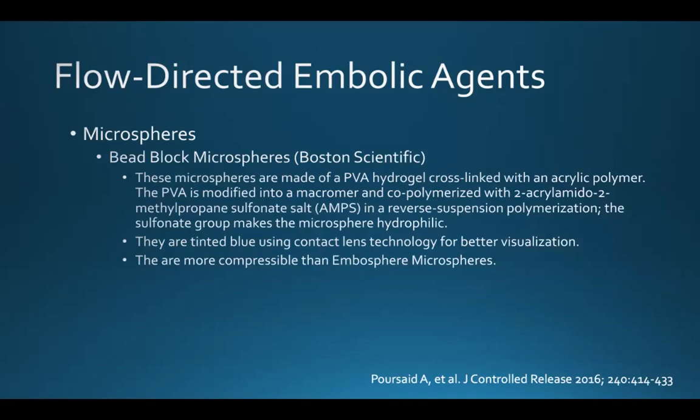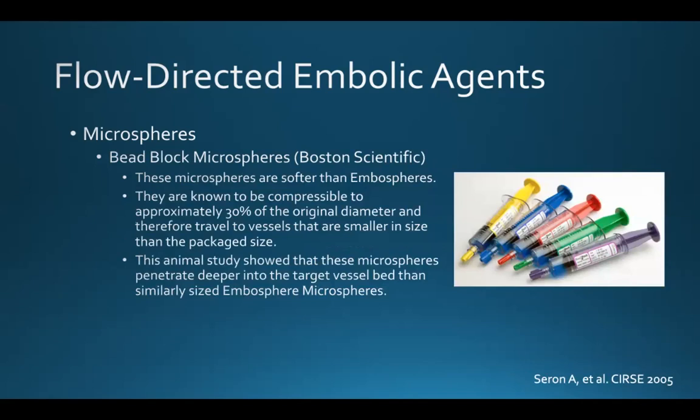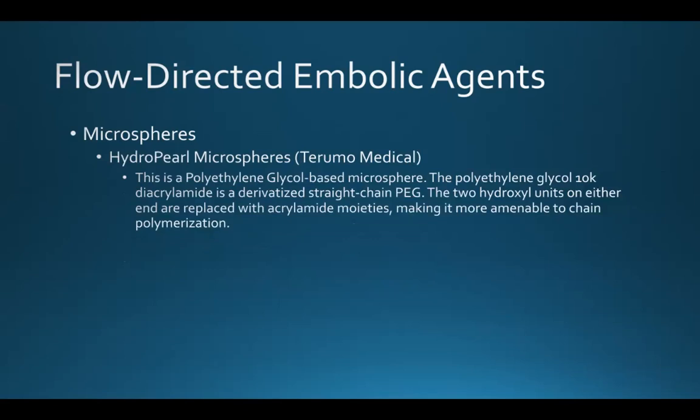Another available agent is bead block microspheres, made of a PVA hydrogel cross-linked with an acrylic polymer. They are tinted blue through contact lens technology so we can better see them, and they tend to be more compressible than embospheres — known to compress to approximately 30% of the original diameter, therefore traveling to vessels smaller than the package size. An animal study confirmed that these microspheres penetrate deeper into the target vessel bed than similarly sized embospheres. I also want to briefly mention the newest bland microsphere, hydropurl microspheres, which are polyethylene glycol-based, though much of the comparative information is not yet available for these microspheres.